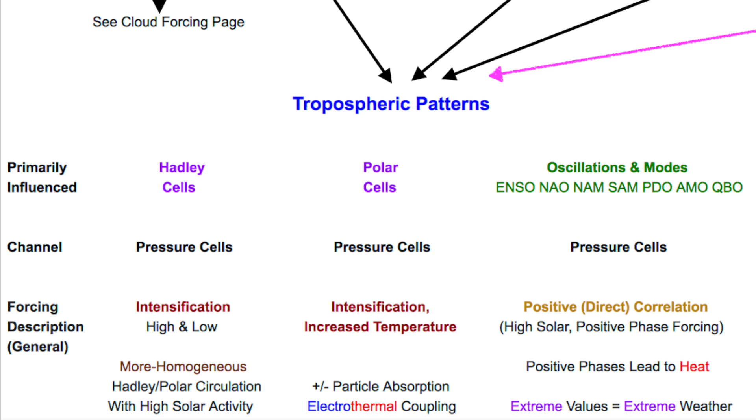There is also a noted thermal effect at the poles where particle energy has better influence over the surface due to lessened sunlight impact. High solar activity leads to positive phase for most of the major patterns, which tend to lead to hotter conditions worldwide, with the extremes of high and low in those phases contributing to what we consider extreme weather events and extreme swings in conditions.